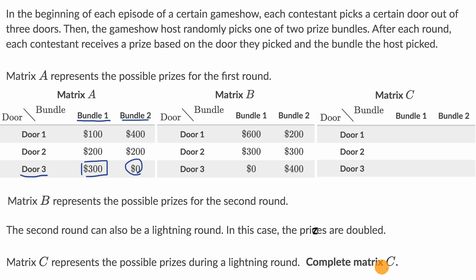Matrix C is a scenario where we're dealing with a lightning round. In a lightning round, the prizes are doubled, but it's the second round. It's doubled relative to what it would have been in the second round. So matrix C is going to be equal to two times matrix B.